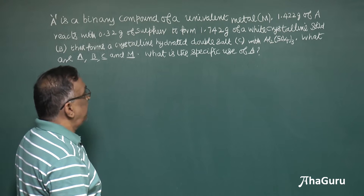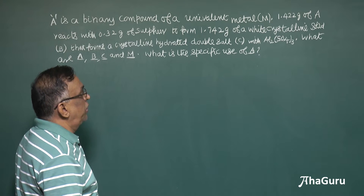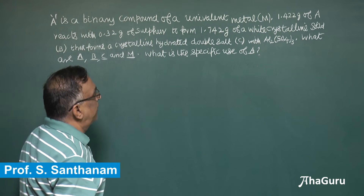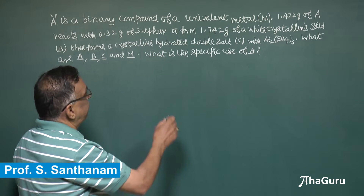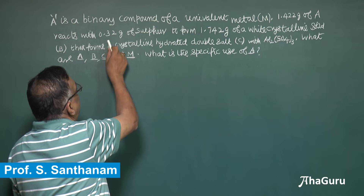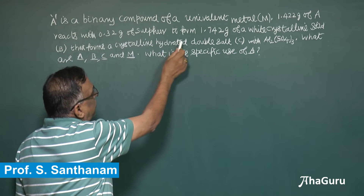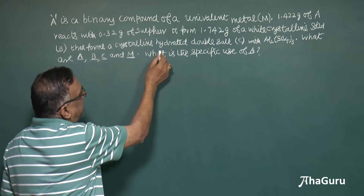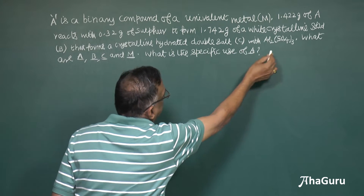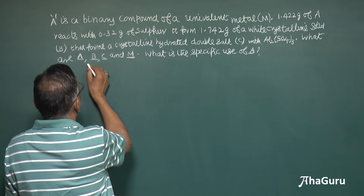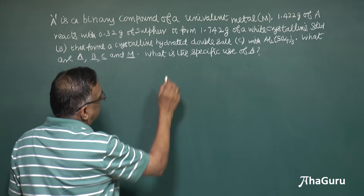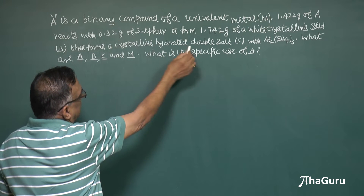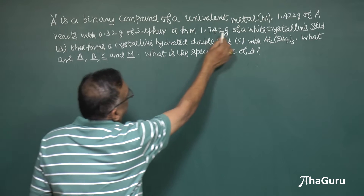This problem deals with the reaction of a compound of a univalent metal M. A is a binary compound of a univalent metal M. 1.422 grams of that compound reacts with 0.32 grams of sulfur to form the given mass of a white crystalline solid B, that forms a crystalline hydrated double salt C with aluminium sulfate. What are A, B, C, and M, and what is the specific use of A?